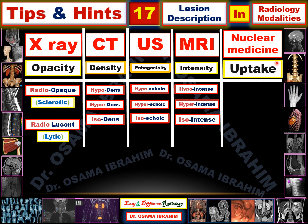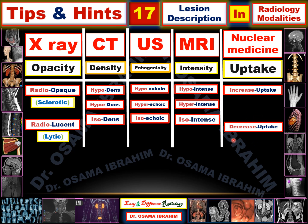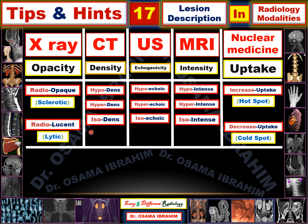Nuclear medicine is different because it depends on the uptake of the tracer. If the lesion takes the tracer more than normal, it can be described as increased uptake — mild, moderate, or marked. If the lesion takes the tracer less than surrounding organs, it is described as decreased uptake. A lesion with intense uptake is called a hot spot; one with no tracer uptake is called a cold spot.